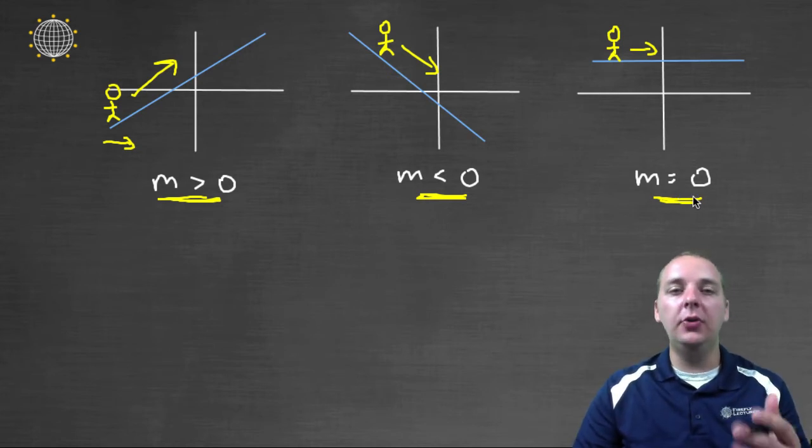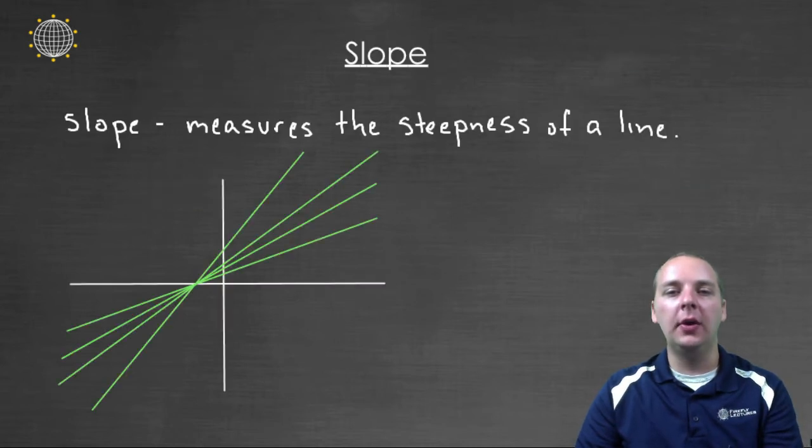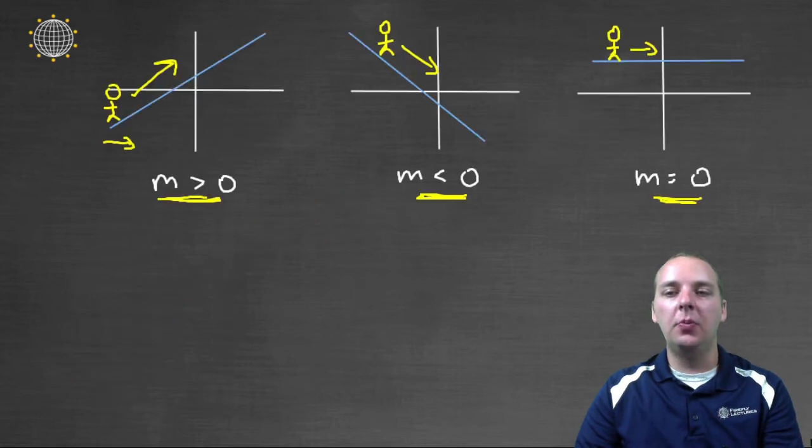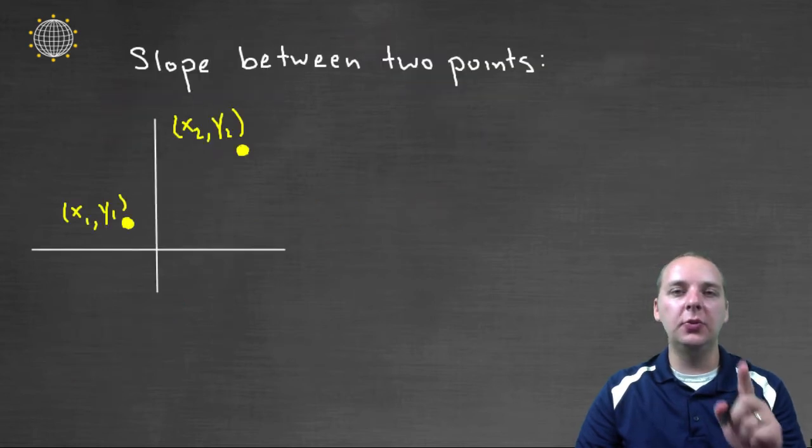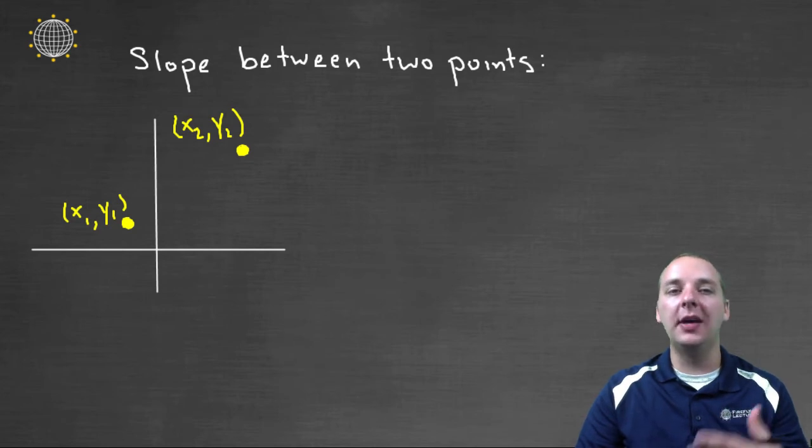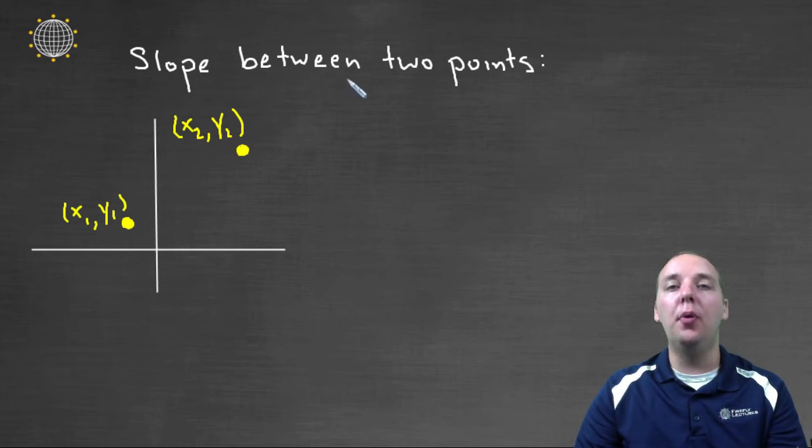So how do we do this? How do we attach a numerical value to all these different types of lines? Well, before we get into that, let me actually mention one last thing, and this will help us understand how we find the slope of a line. Let's talk first about how to find the slope between just two points, then we'll talk about lines.